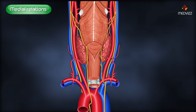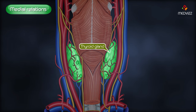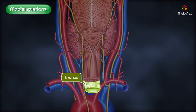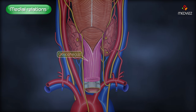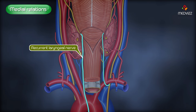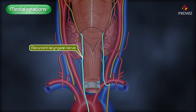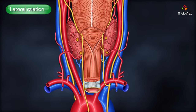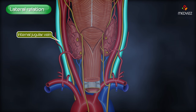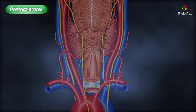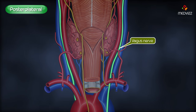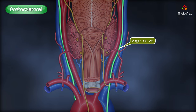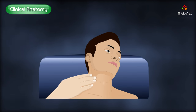The medial relations of the common carotid artery include the thyroid gland, larynx, pharynx, trachea, esophagus, and the recurrent laryngeal nerve. The lateral relation is the internal jugular vein, and the posterolateral relation is the vagus nerve.